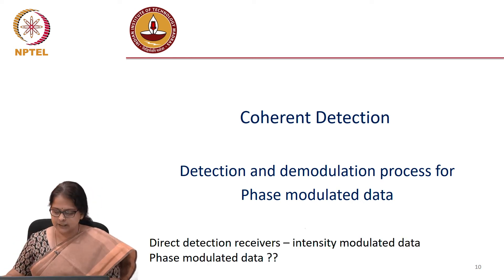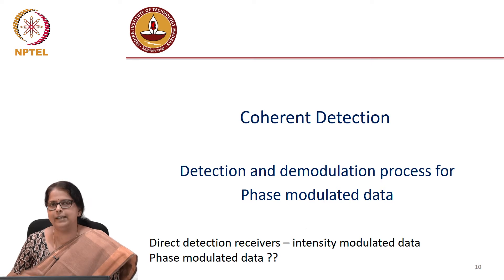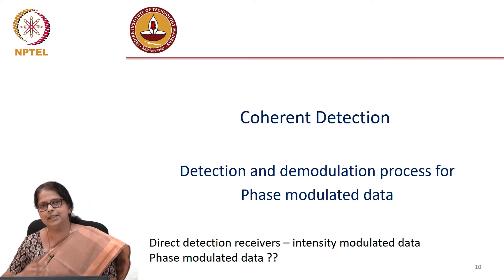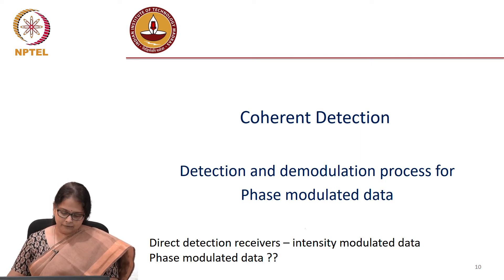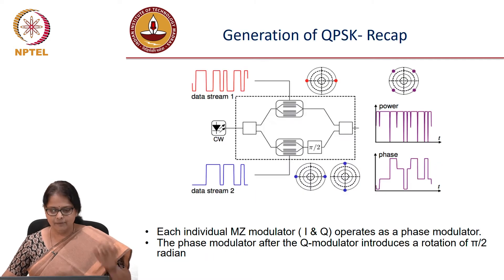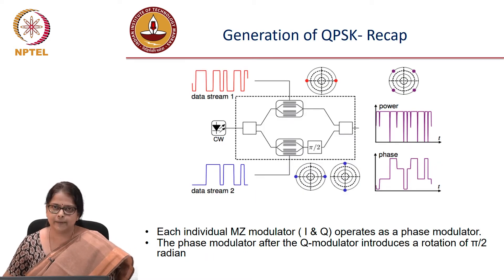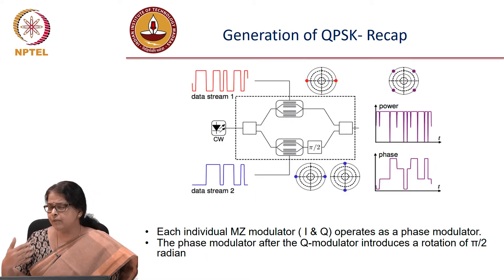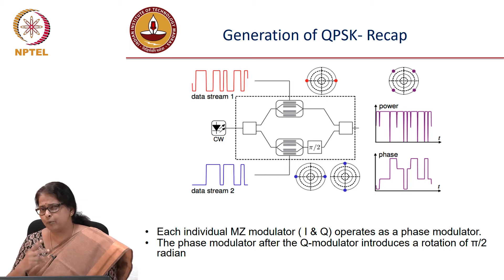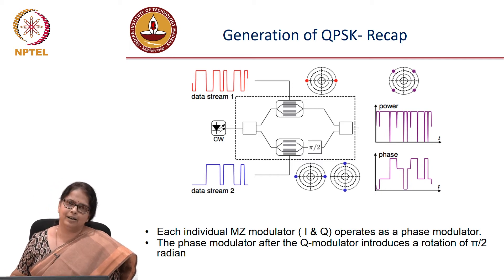The same system you can now use to detect the phase of your incoming signal. So direct detection receivers can be good for detecting intensity modulated data. But for phase modulated data, we want to use coherent detector. But before we move on to coherent detector, we will do a very quick recap on phase modulation.